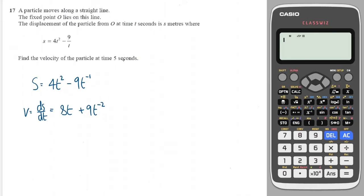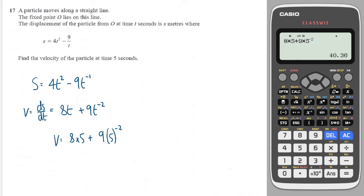It asks me to work out the velocity when t equals 5, so that will equal 8 times 5 plus 9 times 5 to the minus 2. Going to the calculator: 8 times 5 plus 9 times 5 to the power of minus 2 gives me 40.36 metres per second.